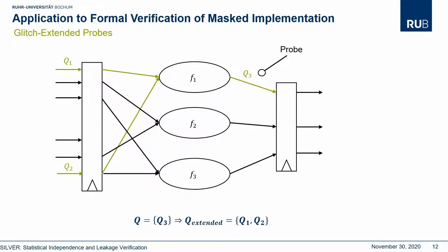Our tool also supports checking all security notions in the robust probing model in the presence of glitches, which is necessary to consider for checking hardware designs. This involves simply a preprocessing step of each probe before the independence check is performed. An example is given here: the probe Q3 realizes a function with inputs from the last synchronization point, meaning the previous register stage. To derive the glitch-extended probe in the robust probing model, Q3 is simply substituted with the set of its inputs to the last register stage — meaning Q3 is substituted with Q1 and Q2 in this example. Then the extended set is used as probes for the check, and we can perform our check using the ROBDDs.